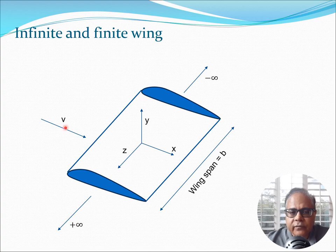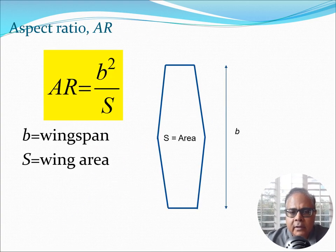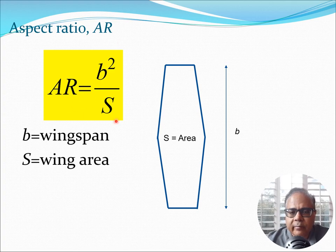Now let's fix some nomenclature. We assume a velocity from the front given by V — that's the air velocity — and then the wingspan is given by B. As soon as we have defined the wingspan, we are able to define what is known as the aspect ratio. We use the symbol AR to define aspect ratio, and AR is B squared divided by S, where B is the wingspan and S is the area of the wing. This is a dimensionless quantity.